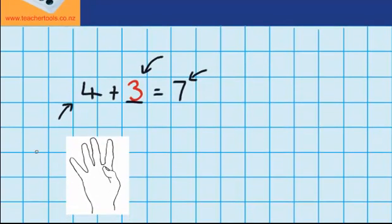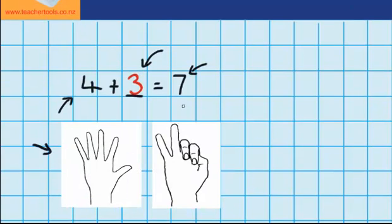Here's what I started with. 4 fingers outstretched. And then I thought to myself, how many more fingers do I need to stretch out to have 7? So you can see I had to stretch out 1 finger on this hand and then 2 fingers on this hand, which is where I got my 3 from.